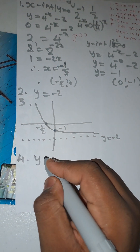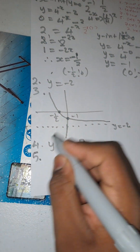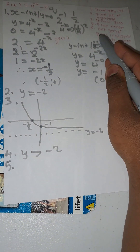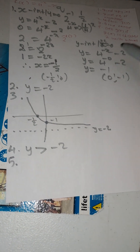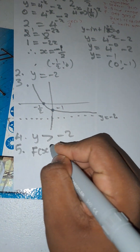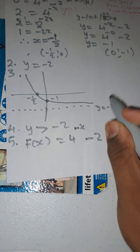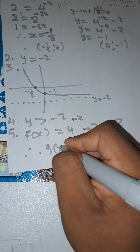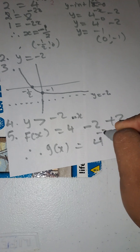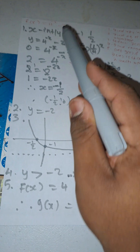Number four: find the range. Since q = -2 and this is a decreasing function with a > 0, the range is y greater than -2. Number five: determine g(x) if f(x) is shifted two units upwards. Shifting upward means adding 2 to the q value: f(x) = 4^(-x) - 2 becomes g(x) = 4^(-x) - 2 + 2.